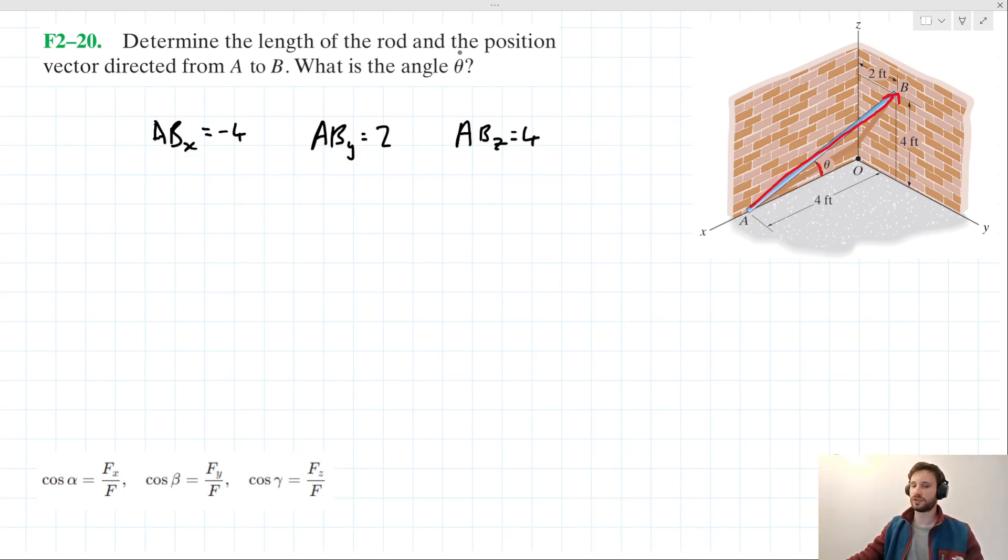So using this information, we can answer this position vector part of the problem. We could describe that like so. I'm going to use I, J, K notation here. I've written A, B with the underbar. The underbar to show that this is a vector. We can say that this is minus four I plus two J plus four K.